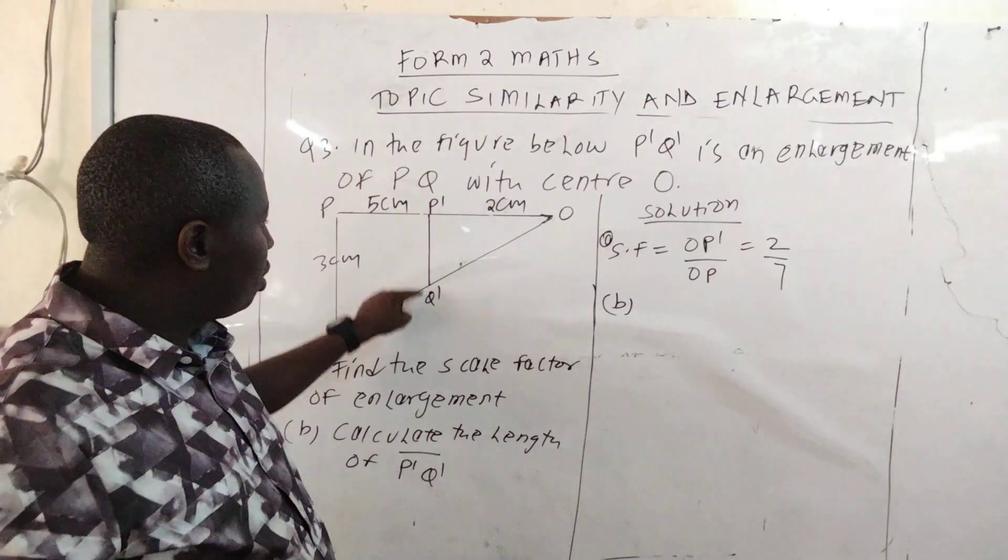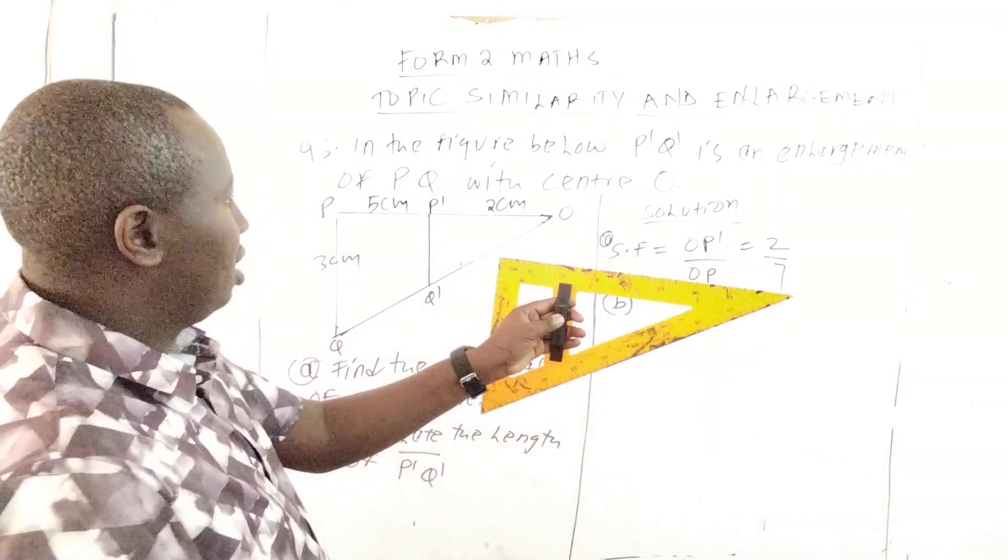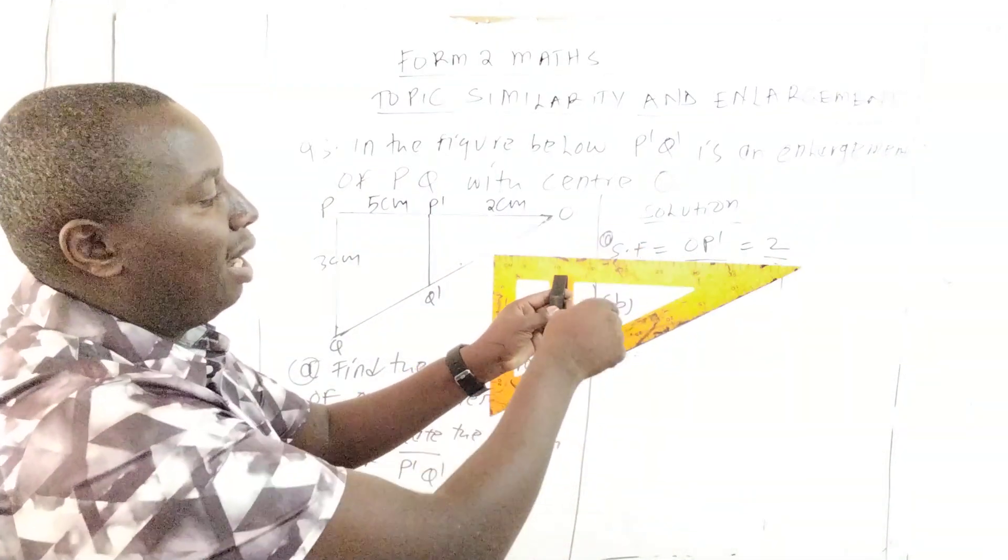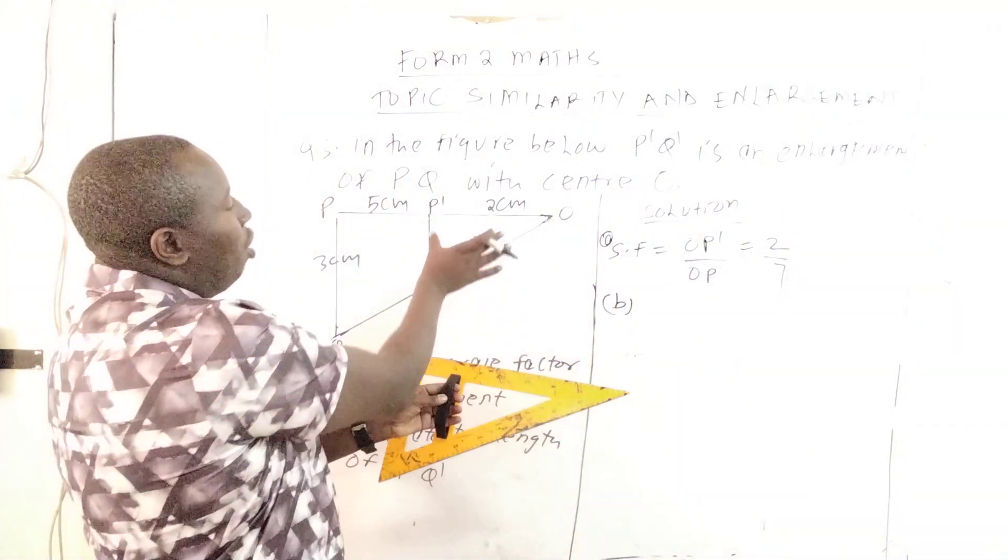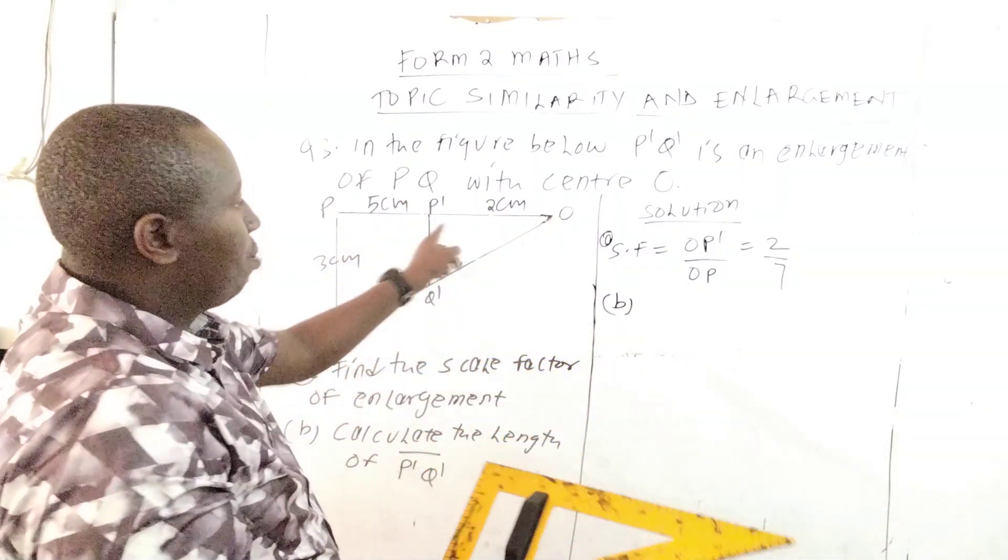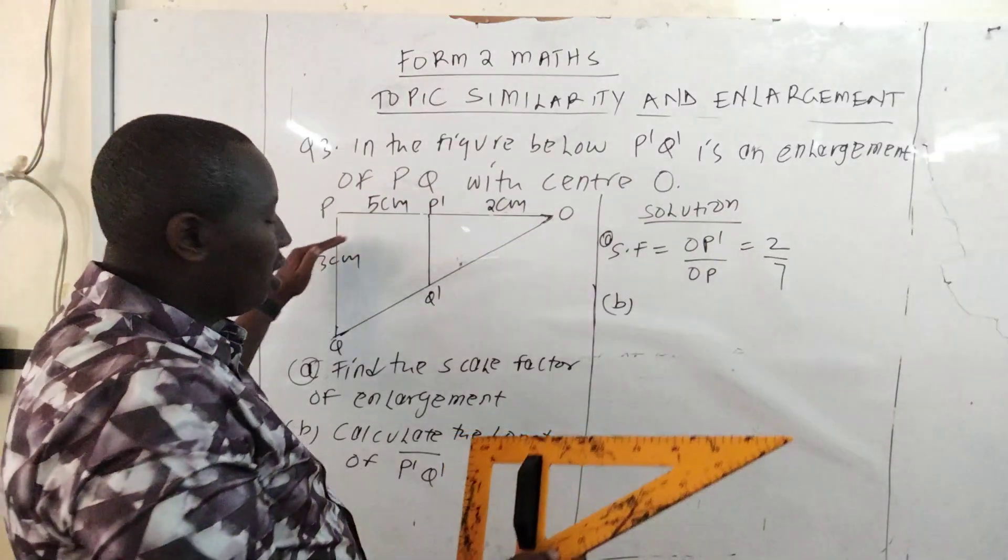In this case, when you have this kind of triangle, you need to compare the large triangle and the small triangle. To get the linear scale factor, we have 2 over 7. That is the length of the small triangle over the length of the large triangle - the corresponding sides are similar.